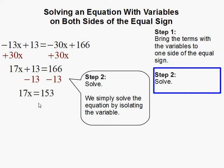That leaves us with 17x equals 153. Then we divide by 17 on both sides of the equal sign to isolate x. x equals 9.